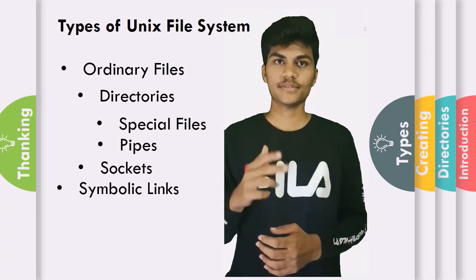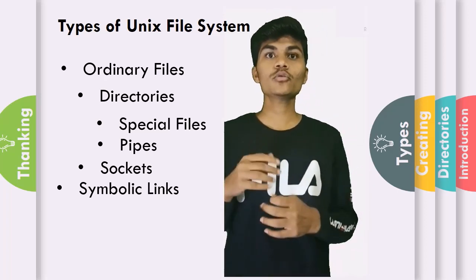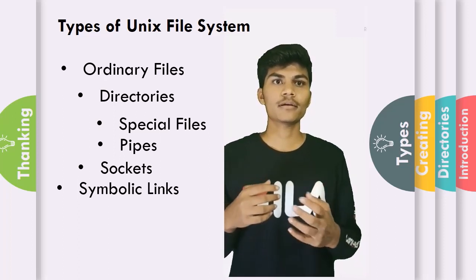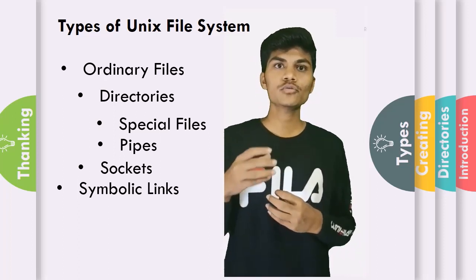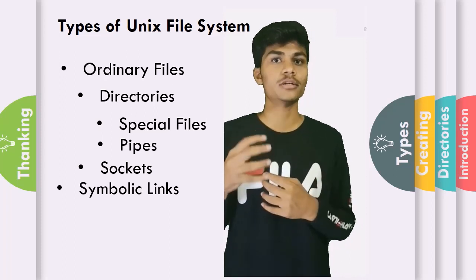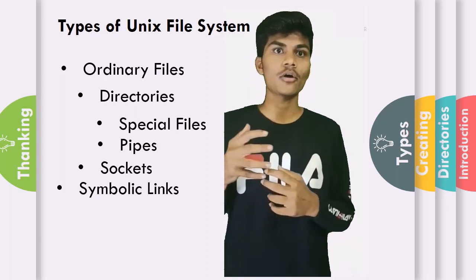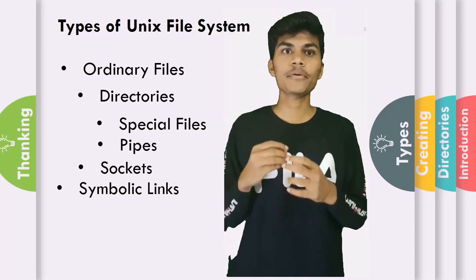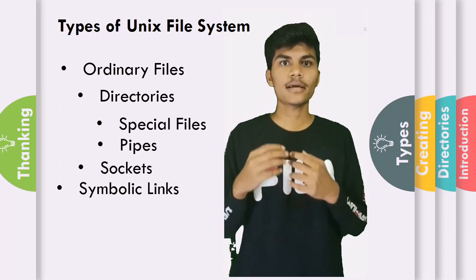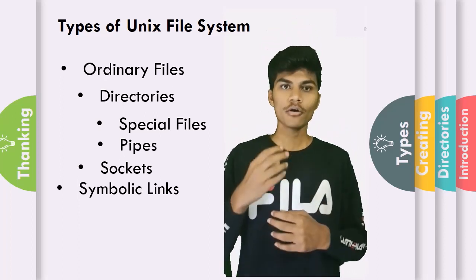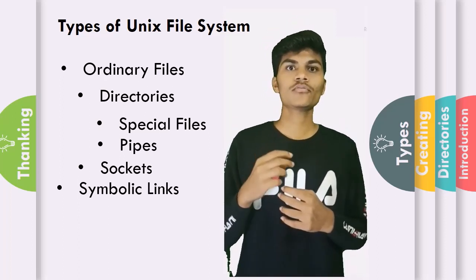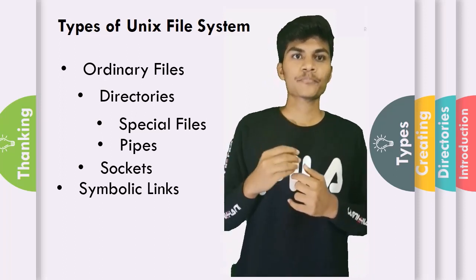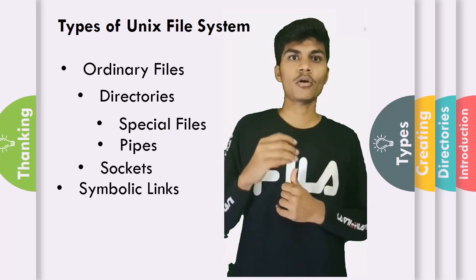Special files are used to represent a physical device such as a printer, tape drive, or terminal. They are used for input or output operations. Device or special files are used for device input/output on UNIX systems. They appear in the system just like an ordinary file or directory. On UNIX systems there are two flavors of special files: character special files or block special files.